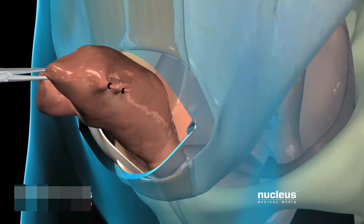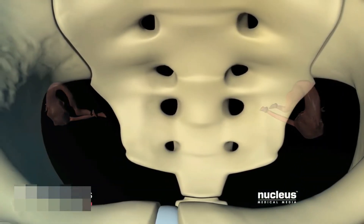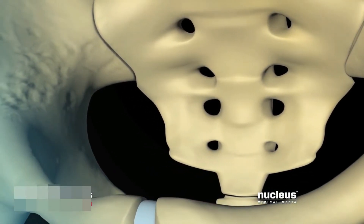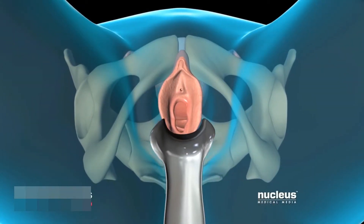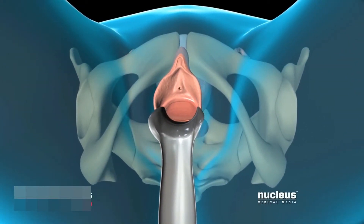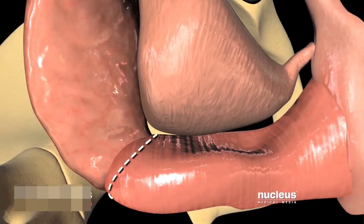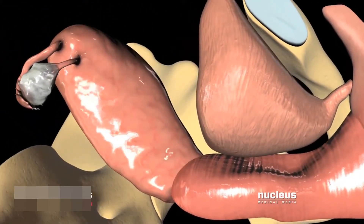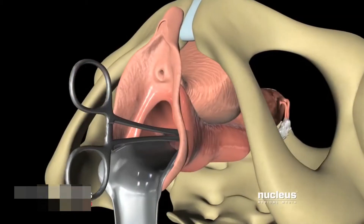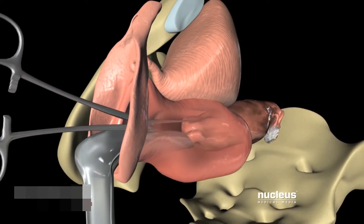If your procedure includes a salpingo-oophorectomy, your surgeon will remove the ovaries and fallopian tubes in the same manner. For a vaginal hysterectomy, a weighted speculum is inserted into your vagina to stretch it and hold it open. Your surgeon will make an internal incision around the cervix, cut the ligaments and tissues holding the uterus in place, and slide the uterus out through the vagina.